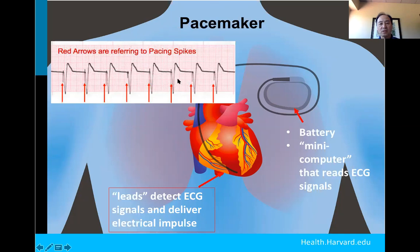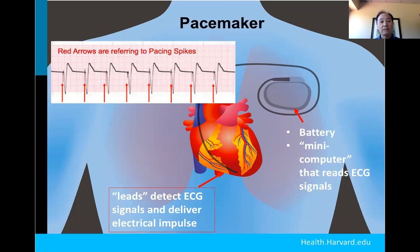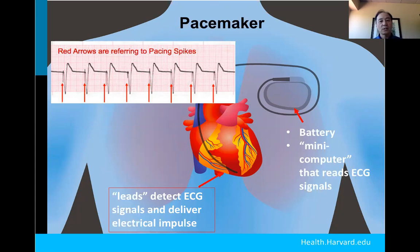These pacemakers can be very smart. You can set the pacemaker to beat at the same rate every single time — say 60 or 70 beats per minute. Or you can set it up so that if your own internal electricity is working well, the pacemaker goes on standby and only kicks in when you've missed a couple of beats. Even smarter pacemakers read whether you're moving or whether your blood chemistry changes — sensing that you're exercising — and turn up the pacing rate to keep up with you. These are called rate-responsive pacemakers.